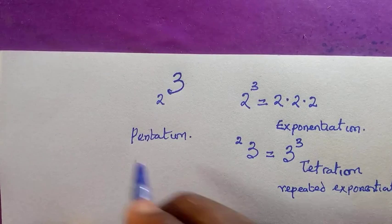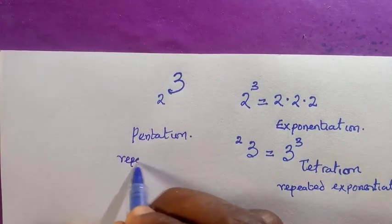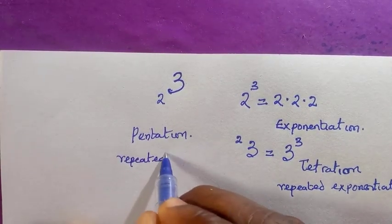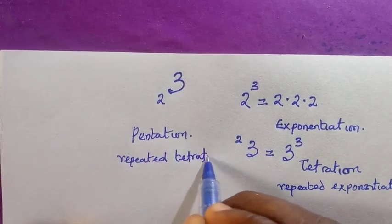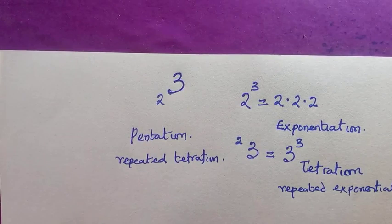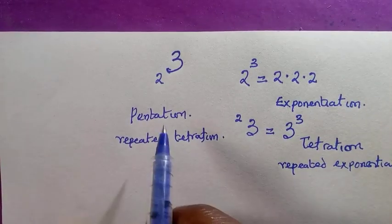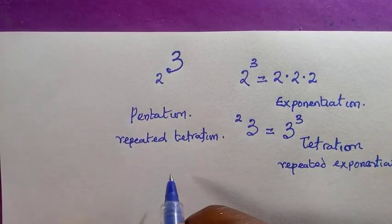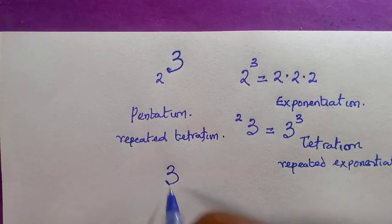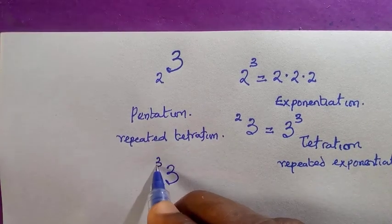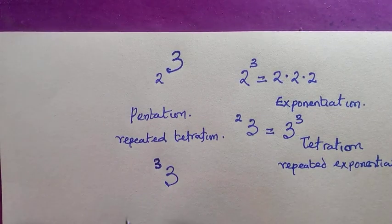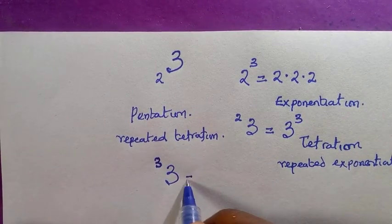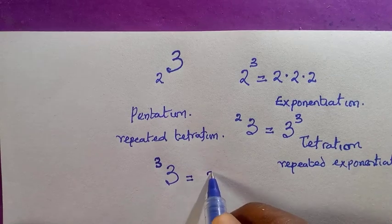Having this, we are going to rewrite this as 3 raised to the power of 3. That is, we write 3 two times but in a tetration form. From the knowledge of tetration, it means that we are writing 3 raised to the power of 3 raised to the power of 3.